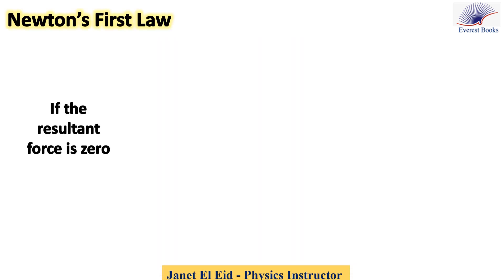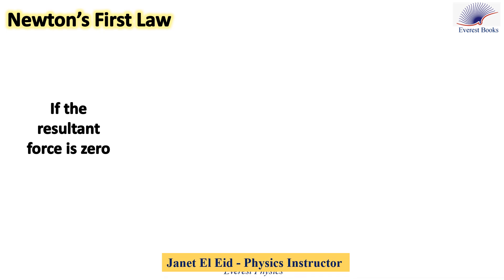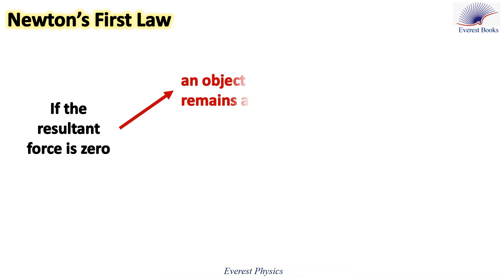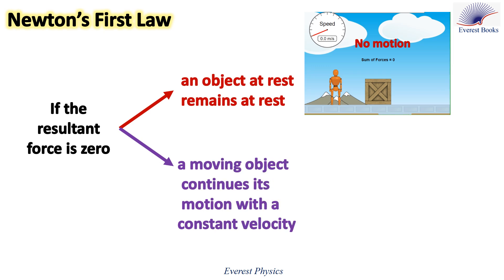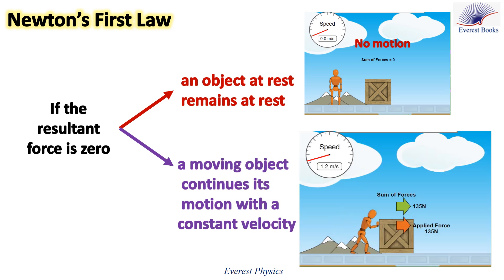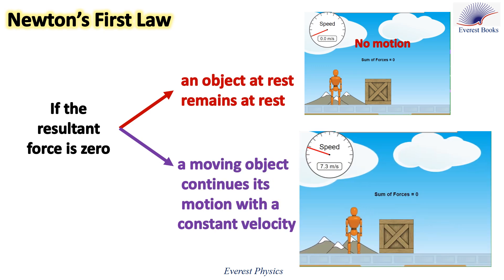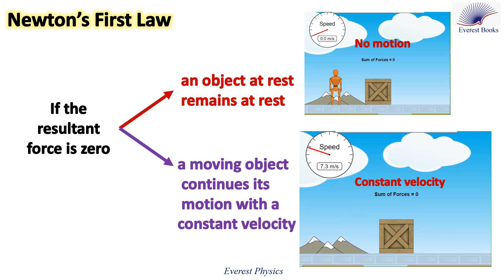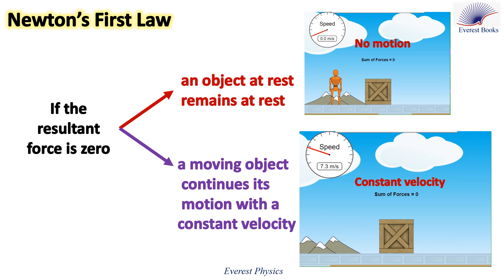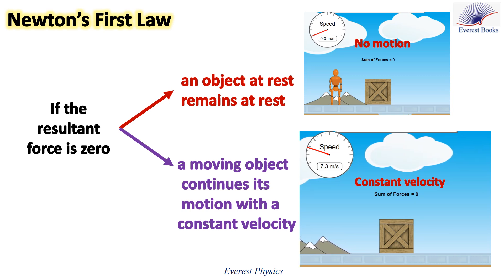In Newton's first law, we have two cases. If the resultant force is zero, an object at rest remains at rest, and a moving object continues its motion with a constant velocity. Look at this box — when the person leaves the box, the forces acting on it balance, but because it was initially in motion, it continues with a constant velocity.